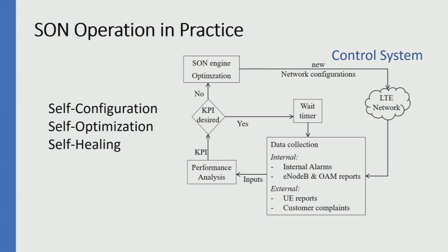There are three phases of SON. The first is self-configuration: you bring a base station to the field, power it on, and it automatically learns its surroundings — discovers new base stations, connects to them, gets their IP addresses, shares configuration, and adjusts coverage. It may also have passive scanners continuously scanning the environment for new base stations. Additionally, mobile phones everywhere upload measurement information and cell information to base stations, which use this to configure themselves or connect to new cells.